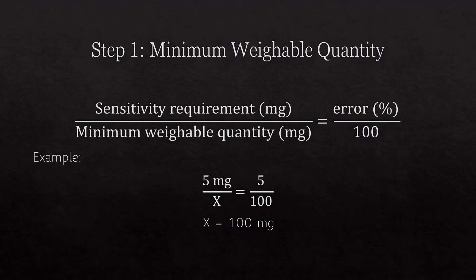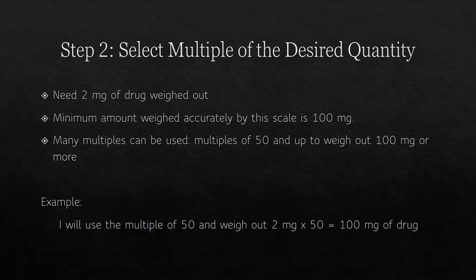In the example I'll be using, the scale has a sensitivity requirement of 5 milligrams and the maximum error that you can have is 5%. So if you plug those numbers into the equation using X as the minimum weighable quantity, you will find that X equals 100 milligrams.